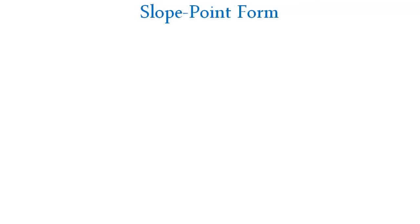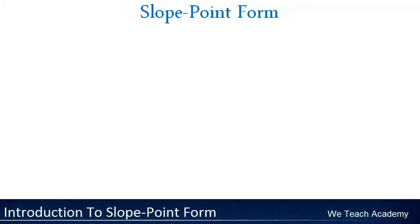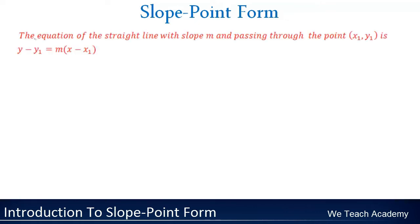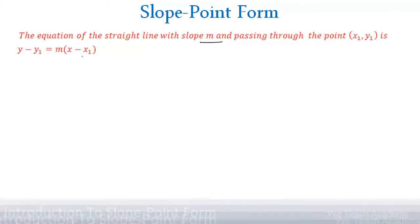Hello guys, this is Mayuri from VDG Academy and this section is devoted to discuss the equation of a straight line in slope-point form. Let me prove the formula using a theorem: the equation of a straight line with slope m and passing through the point (x1, y1) is y minus y1 is equal to m into x minus x1.